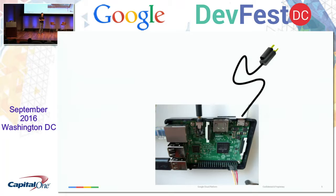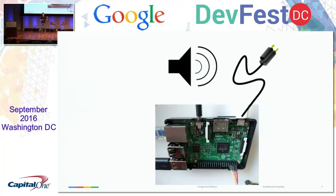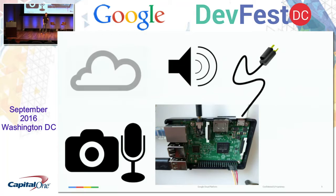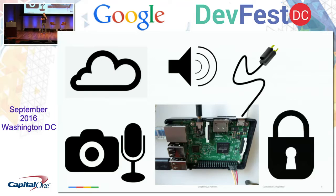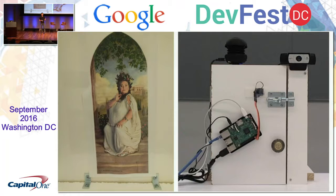Naturally, I used a Raspberry Pi, because Raspberry Pis are what you use to build stuff with hardware. I needed it to talk, just like the lady could sing and say stuff, so we added a speaker. I needed some way to see, and some way to hear. I did some stuff with the cloud, and somehow tied it all together to make a lock system.